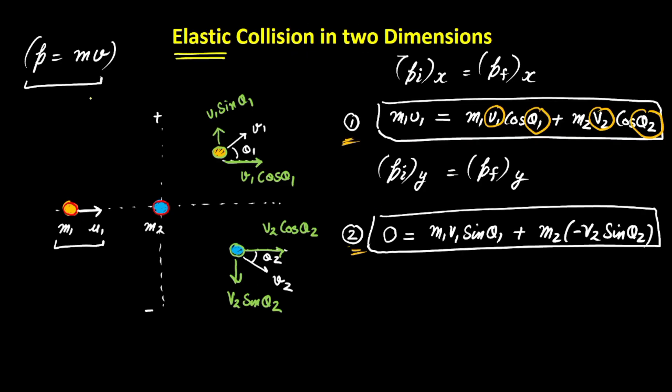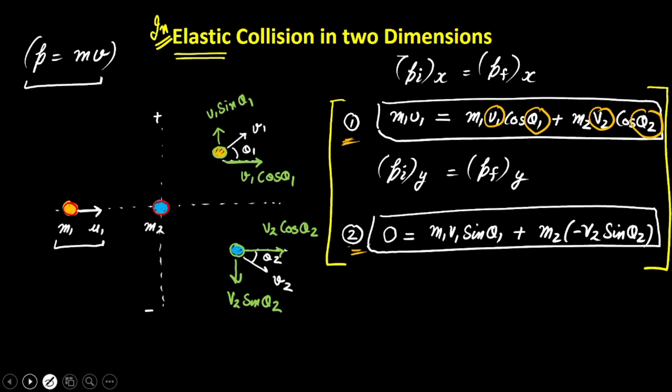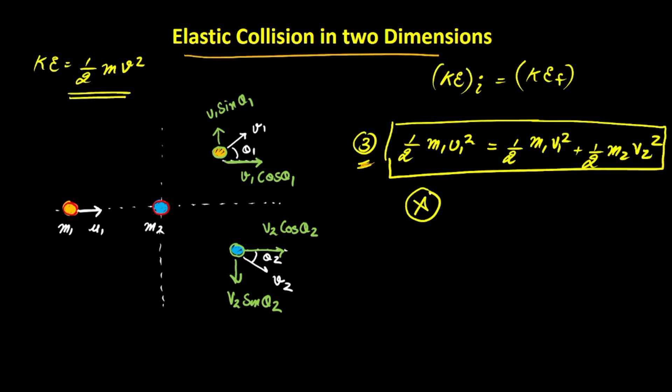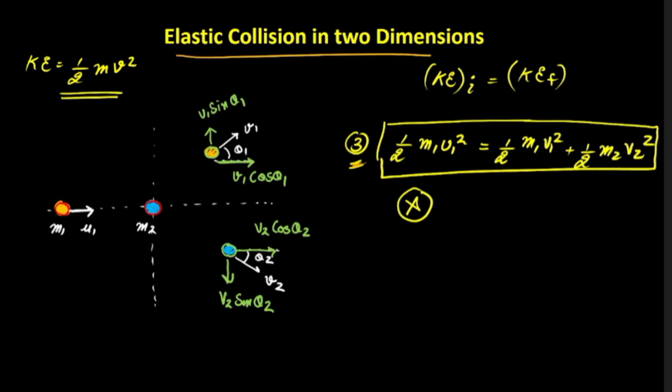This same concept can be applied to inelastic collision as well. The only difference is that in inelastic collision, momentum is conserved but kinetic energy is not. Otherwise, the approach is more or less the same. I hope collisions in two dimensions are clear to you now. See you in the next video — bye-bye!